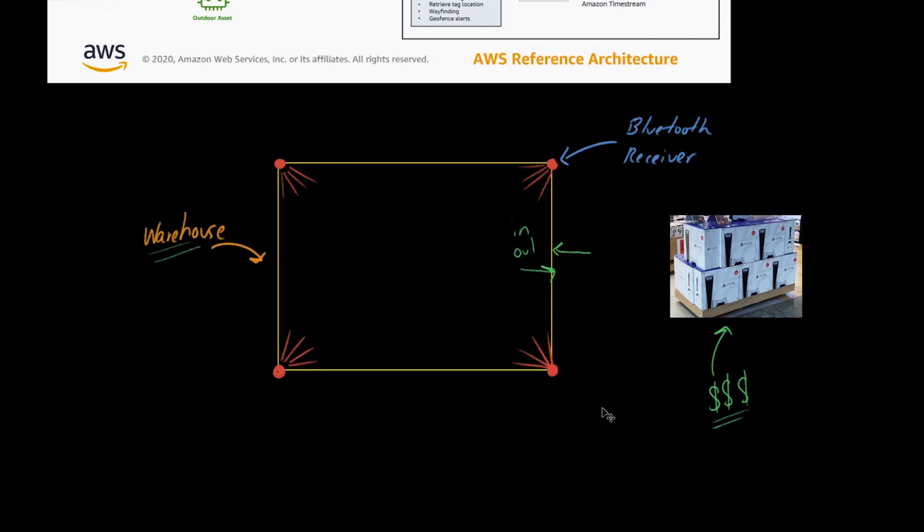How do they do this? How does this fit in with the Bluetooth receiver stuff? That's what I want to cover first.